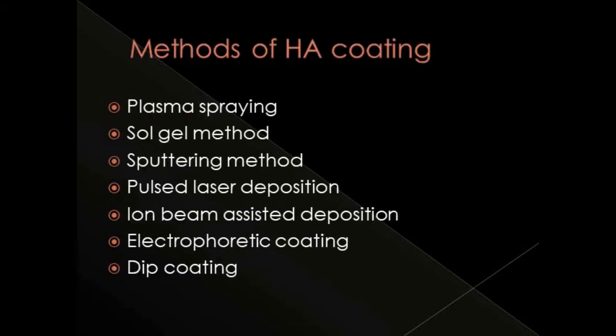Methods by which hydroxyapatite is incorporated onto the surface include bi-plasma spray, sol-gel method, ion sputtering method, pulsed laser deposition, ion beam assisted deposition, electrophoretic coating, and dip coating.